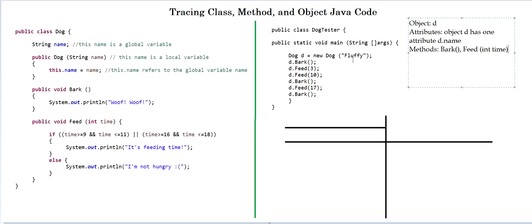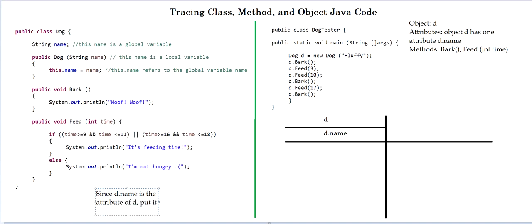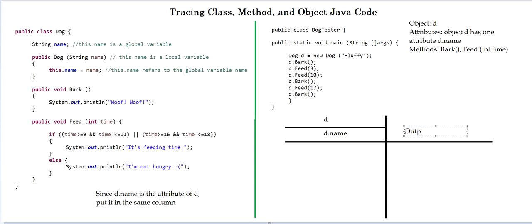So let's start our tracing. In the first line of our tester code, we created the object D. We're going to put D into our first column and since D has one attribute, D.name, this is going to go directly below D. Since there are no other objects and no other attributes, this is it for our code and we just have to write output here.